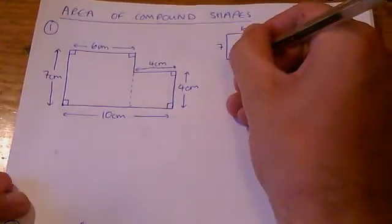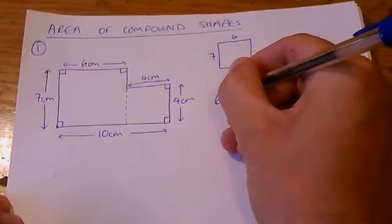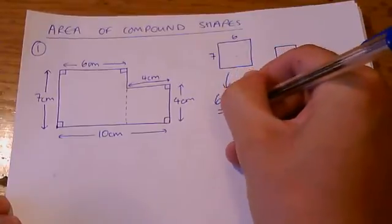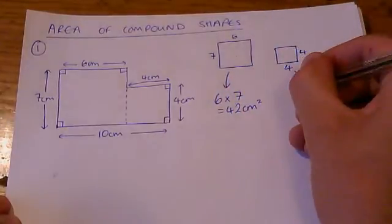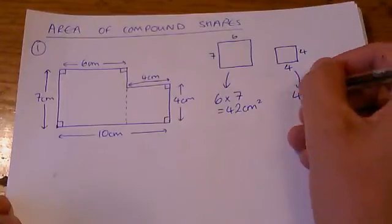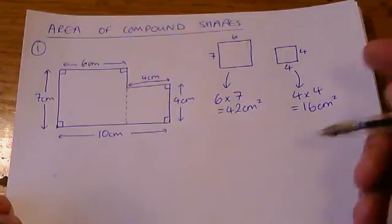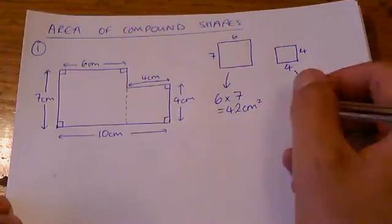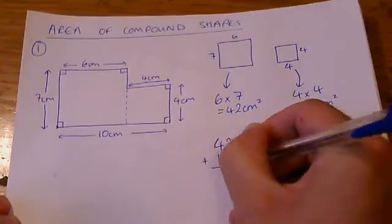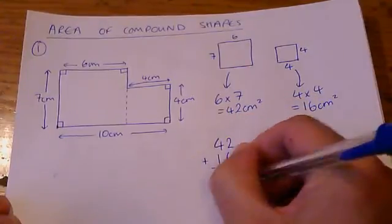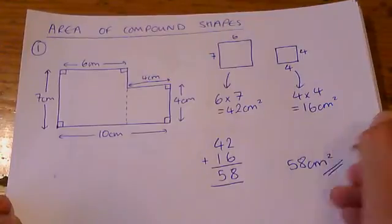Now let's work out the areas separately. The area of this one is the length times the width. The area of this one is the length times the width because it's a rectangle, or in this case it's a square, a special type of rectangle. And then we need to add those two together, and the answer is 58 centimeters squared.